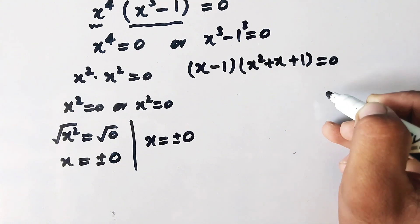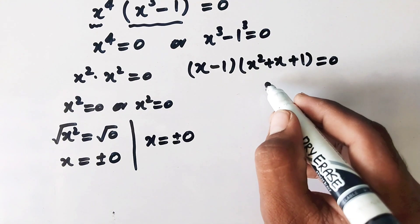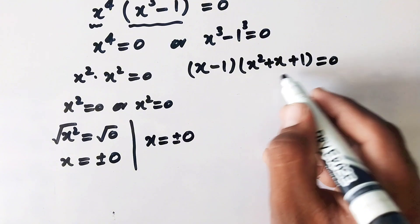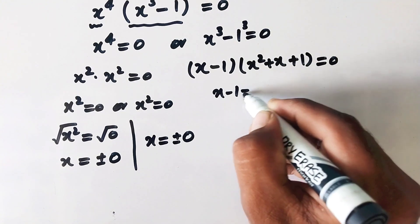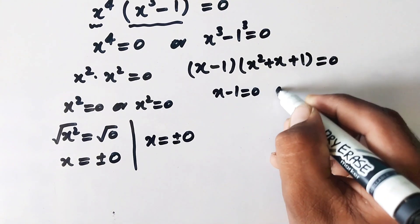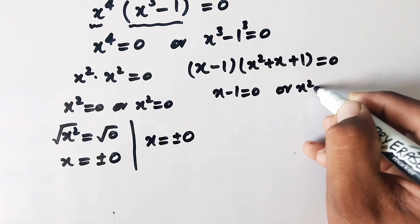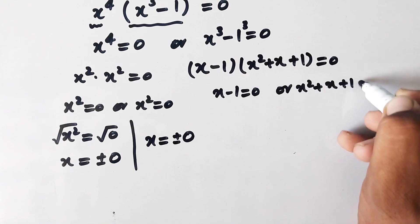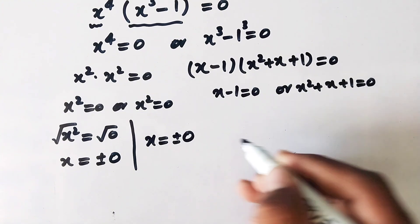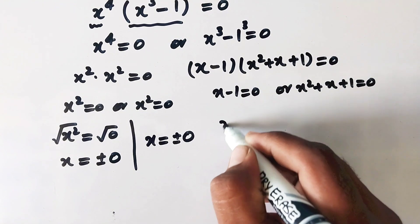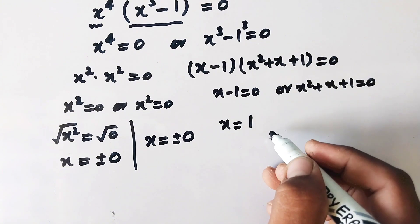We split this equation into two: x minus 1 equal to 0, or x squared plus x plus 1 equal to 0. From the first factor, x equals positive 1.